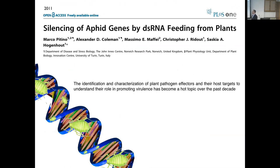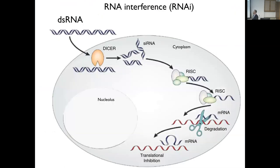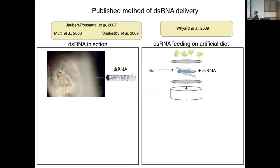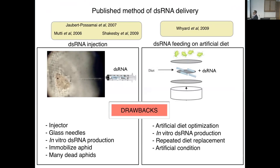There is another way to functionally characterize gene function using RNA silencing. We can knock down the gene expression of aphid genes. How does RNA interference work? If we know the sequence of a messenger RNA, we can synthesize double-stranded RNA and deliver it to cells, which recognize this dsRNA using the Dicer enzyme. Dicer chops the dsRNA into small interfering RNA, which then complexes with RISC to identify the corresponding messenger RNA and block transcription. At that time there were two systems for dsRNA delivery: injection or artificial diet, but both had drawbacks.